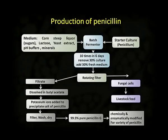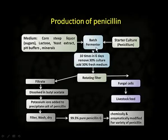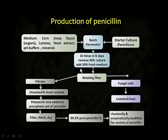You can also see the production of penicillin in this slide. The medium contains carbon-rich sources — sugars, corn steep, lactose — yeast extract, pH buffers, minerals, and a starter culture, which is the fungus that produces penicillin. These are added to a batch fermenter. Ten times over 6 days, we remove 30 percent of the culture and add 30 percent fresh medium.